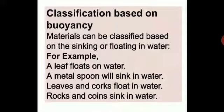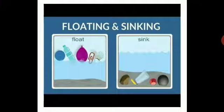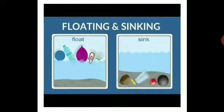Buoyancy is divided into sinking and floating. Rocks and coins sink in water. The diagram shows how some objects float and some sink. Floating means remaining on the top layer of the water, while sinking means going down below the water level. For example, when you put a cork and a coin in a glass of water, the cork will float and remain on the surface, whereas the coin will go down below.